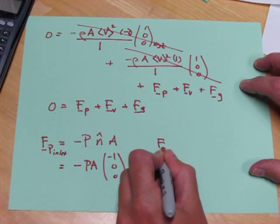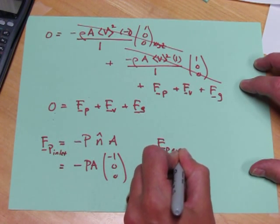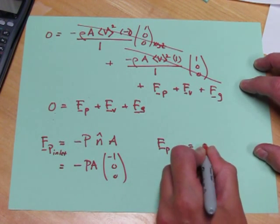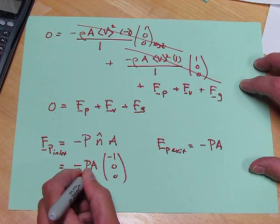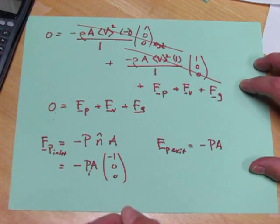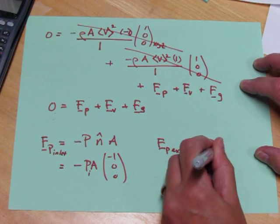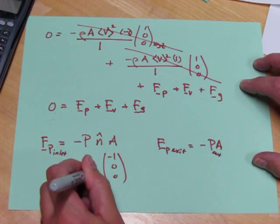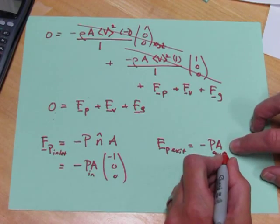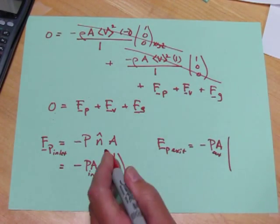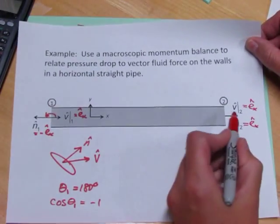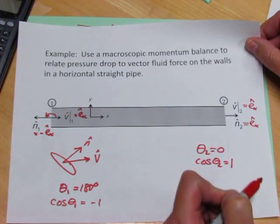To write FP for the exit, we also write minus PA. So this is the pressure at the inlet and the cross-sectional area is the same everywhere. This is the pressure at the outlet. Cross-sectional area is the same. And we need the outwardly pointed unit normal at the outlet, which is just EX.